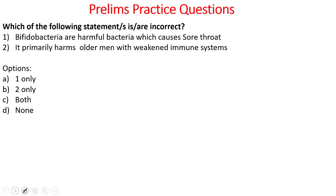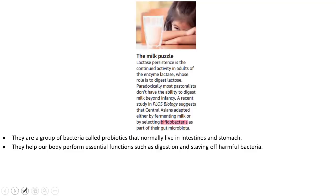Now let's look into some preliminary practice questions. Which of the following statements about Bifidobacteria is incorrect? One — Bifidobacteria are harmful bacteria which cause sore throat. Two — It primarily harms older men with weakened immune systems. The answer to this is both statements are incorrect. That is because Bifidobacteria are not harmful bacteria but are probiotics — good bacteria. They normally live in intestines and stomach and help our body perform essential functions such as digestion and staving off harmful bacteria. They help in preventing infection and also producing vitamins and other important chemicals. Only when their count is less may we have to take supplements to increase Bifidobacteria.